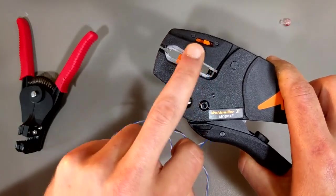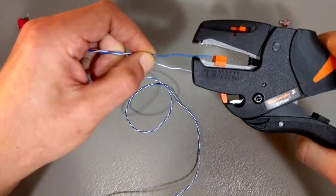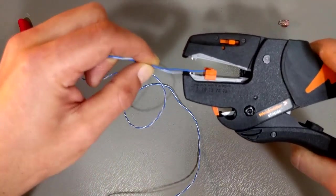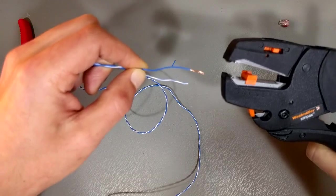It's got this kind of tension adjuster here, and what you do is you put your wire in up to the stopper and you squeeze and you're done.